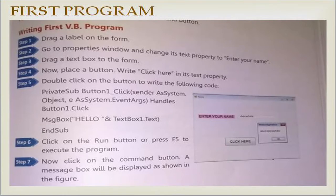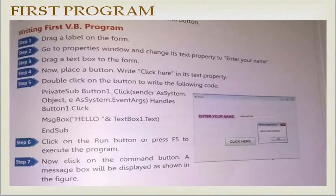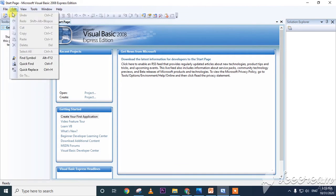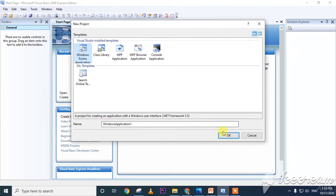To write our first program in Visual Basic: drag a label onto the form, set its properties, then drag a text box, place a button and set its Text property to 'Click Here'. Double-click the button and write the following code: MsgBox("Hello " & TextBox1.Text). Then click the Run button or press F5 to execute the program.